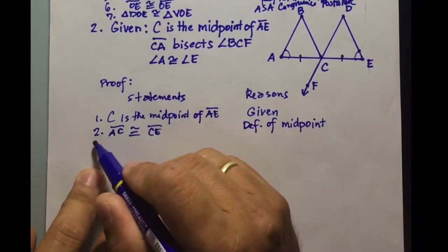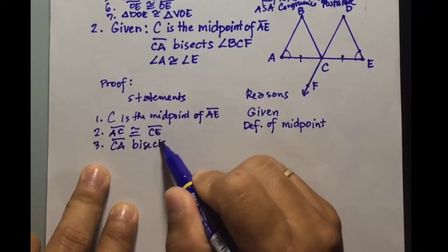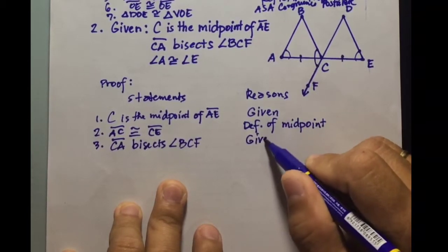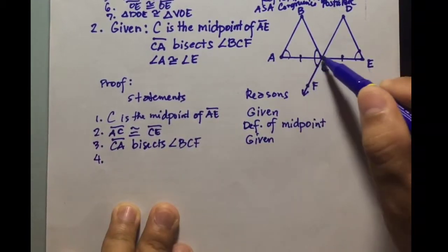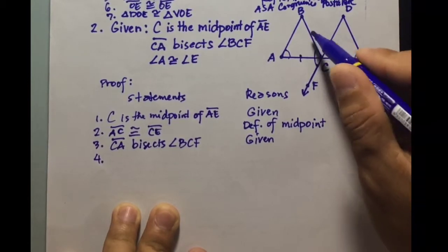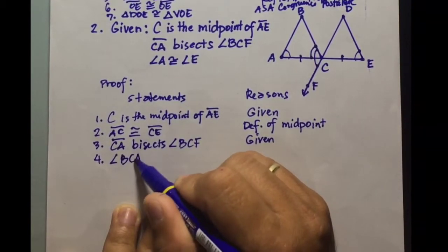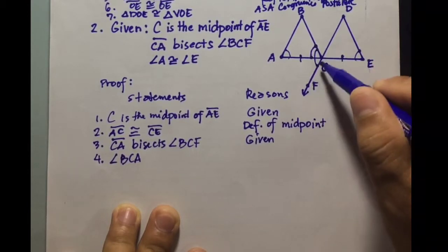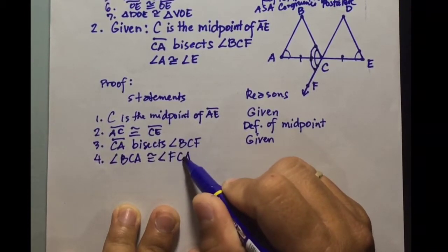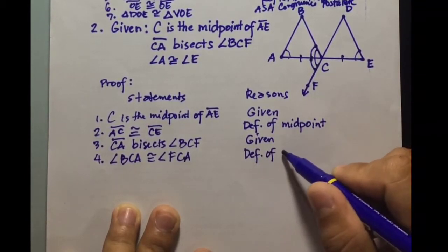Statement number 3: line segment CA bisects angle BCF — reason: given. Statement number 4: since CA bisects angle BCF, it divides the angle into two congruent parts, so angle BCA is congruent to angle FCA. The reason is: definition of angle bisector.